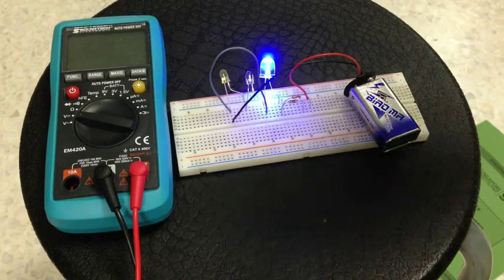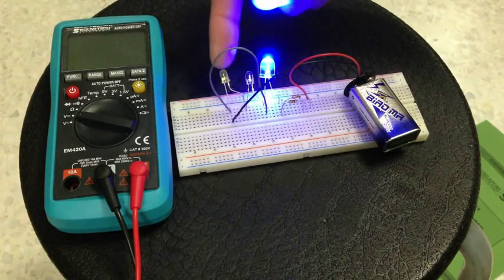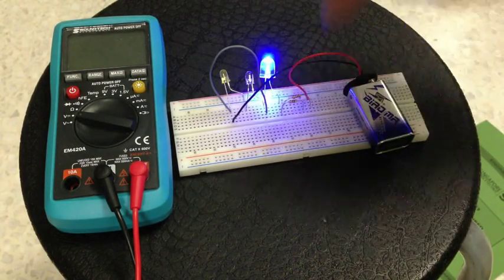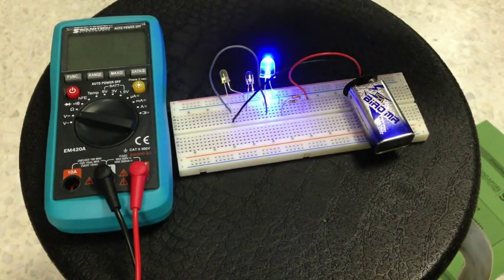So what's happening is the LEDs are sharing the voltage between them. There's 9 volts in the battery, some voltage across the resistor and a voltage across the LEDs.